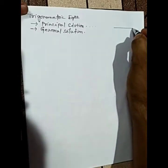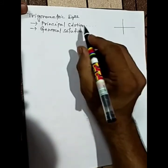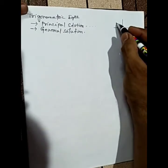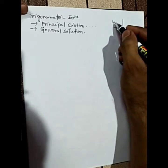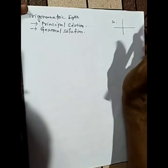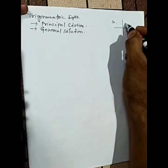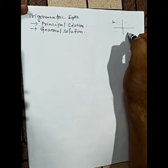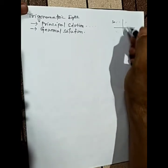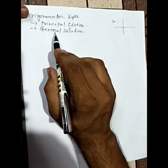Since there are four quadrants, take the example of sine. Sine is negative in the third and fourth quadrant, and sine is positive in the first and second quadrant. So in positive you get the first and second quadrant, and in negative you get the third and fourth quadrant. Similarly with the other trigonometric functions, so you will get two principal solutions.